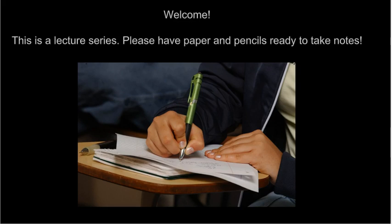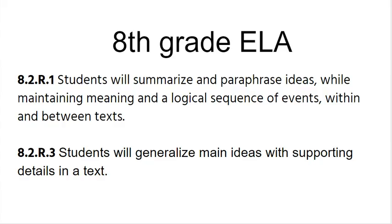So what standard are we going to cover today? We're going to look at Oklahoma Standard 8.2.R.1, where students will summarize and paraphrase ideas while maintaining meaning in a logical sequence of events with and between text. We will also be looking at 8.2.R.3, where students will generalize main ideas with supporting details in a text. If you are not from the state of Oklahoma, you will probably find your standards that are similar about summarizing and paraphrasing ideas.